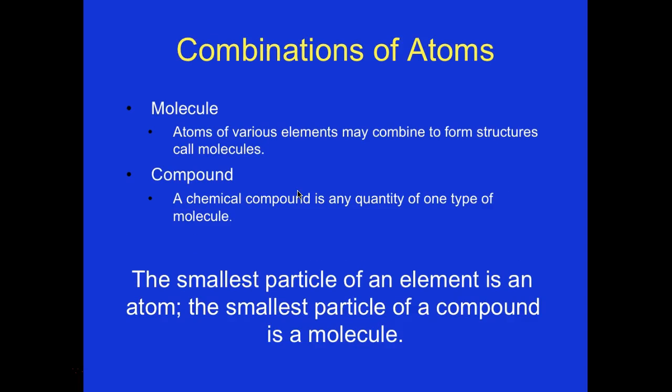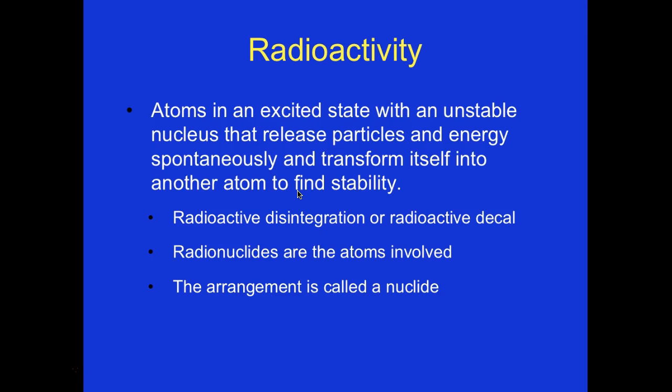Combination of atoms: we have molecules and compounds. Atoms of various elements may combine to form structures called molecules and compounds. A compound is any quantity of one type of molecule. The smallest particle of an element is the atom; the smallest particle of a compound is a molecule.